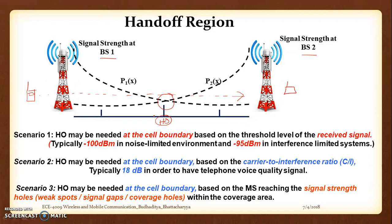The boundary is important because when the mobile is far from the base station, the signal quality naturally drops. The second scenario is that handoff may be needed at the cell boundary based on the carrier-to-interference ratio — approximately 18 dB is required to have telephone voice quality. Some interference from the carrier signal occurs, and when reaching the boundary we might need a handoff. Whatever happens at the boundary, when going beyond a certain coverage region of a particular base station, you need a new base station to take care of the ongoing call.